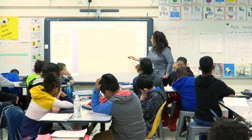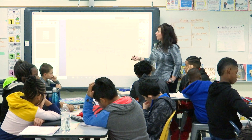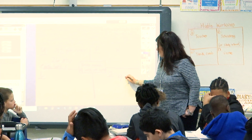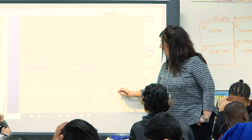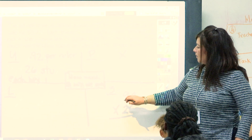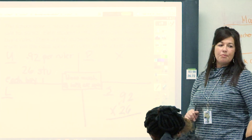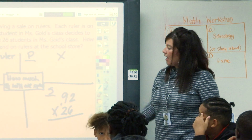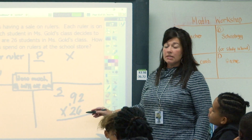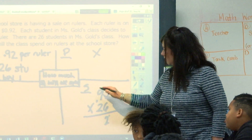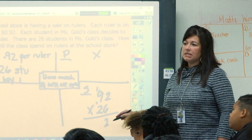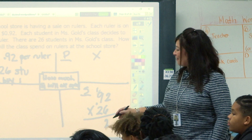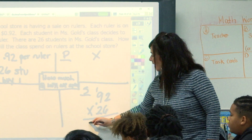So let's set it up as a multiplication problem. Does it matter if I put 92 or 26 first? No — we can arrange them either way. I can put my decimal point up there, but we're going to worry about it at the end. I'm going to solve this using the algorithm for now. Six times two is twelve. Nine times six is fifty-four. Fifty-four plus one is fifty-five.